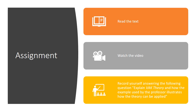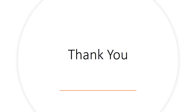For the speaking assignment, read a text and watch a video. After doing both, record yourself answering this question: explain the AK theory and how the example used by the professor illustrates how the theory can be applied. To answer it, you need to have both read and watched the material. That's it for this assignment — thank you, dear students, and good luck.